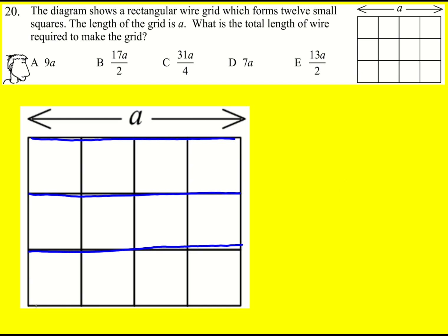2a, 3a, 4a horizontally and then the length of the side of one of the squares is going to be a divided by 4 or a quarter a,